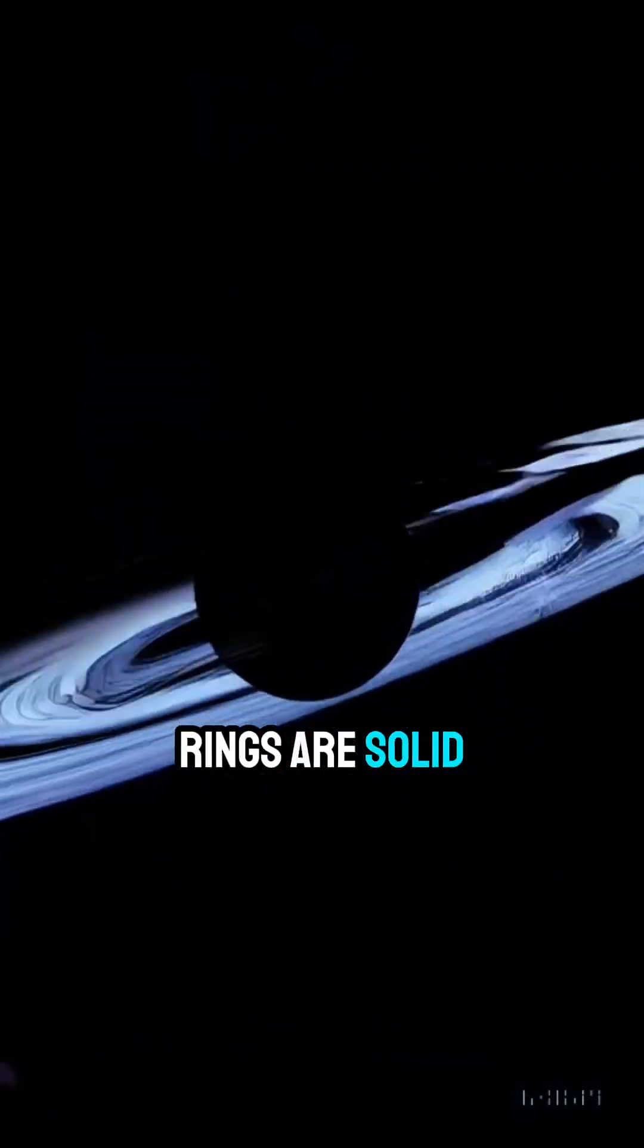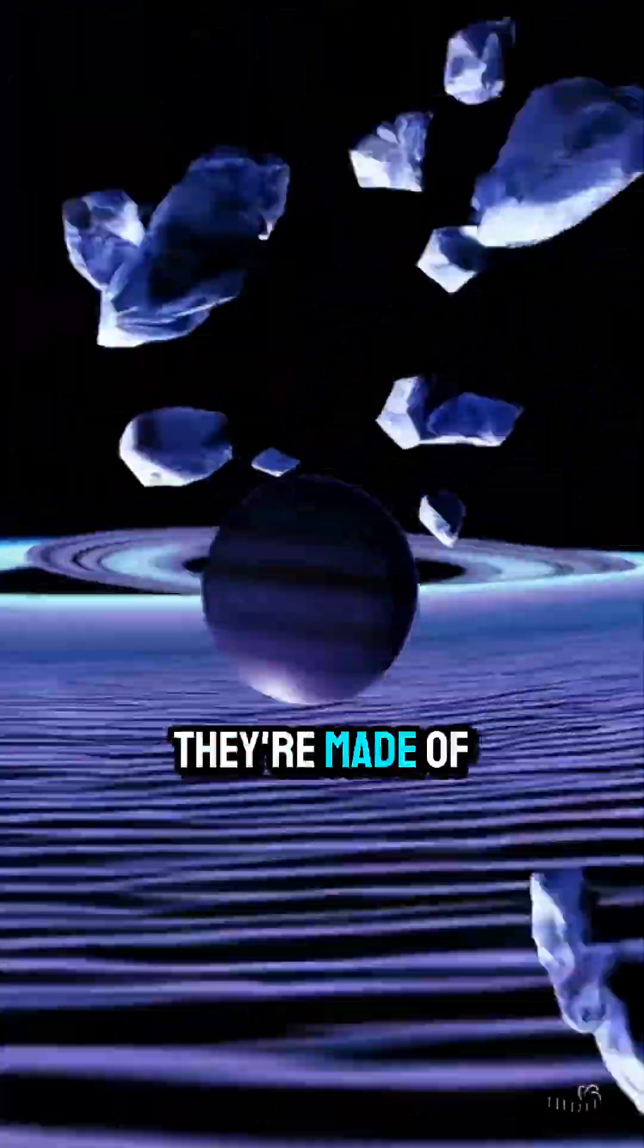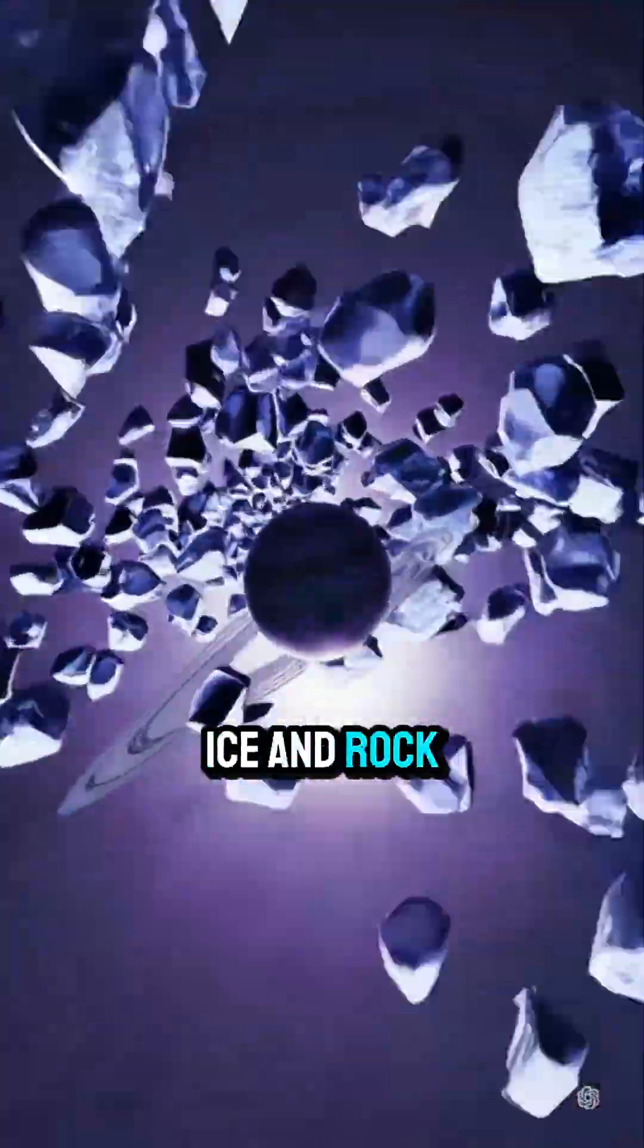Everyone thinks Saturn's rings are solid, like some giant cosmic hula hoop. In reality, they're made of countless pieces of ice and rock, each orbiting at insane speeds.